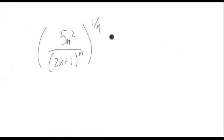So that would become on the top 5 to the 1 over n times n to the 2 over n. On the bottom, that would become 2 to the, just 2n plus 1.